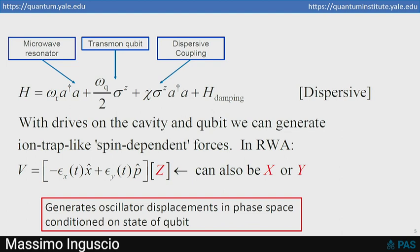So the Hamiltonian you see in this equation, there's a single bosonic mode A, there's a single qubit described by the sigma Z, and there's a dispersive coupling between them, which is very strong. And if you add to this Hamiltonian drives on the qubit and on the cavity, you can convert that dispersive coupling into the interaction term V shown at the bottom, which is basically the ion trap spin-dependent forces Hamiltonian. And that Hamiltonian causes displacements of the oscillator in phase space whose sign depends on the state of the qubit, controlled by the Z, or if you do qubit rotations, controlled by the Pauli X or Y.